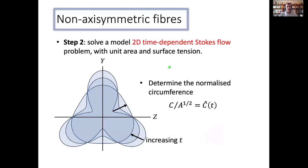Step two. So now what I've got to do, and this is this sort of three lobed shape. So suppose I start with that three lobed shape. I just solve a two dimensional time dependent Stokes flow problem. With area equals one and surface tension equals one. And that's what I'm showing schematically here. So as time evolves, this funny sort of three lobed shape is evolving towards a circle. Now you can solve that problem, whatever your favorite method is, numerical or semi analytical, whatever your favorite method is for solving 2D Stokes flow problems.